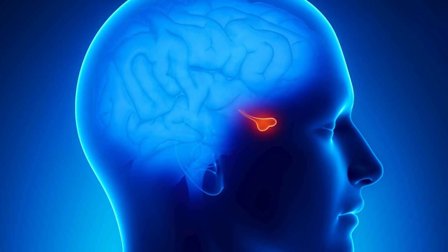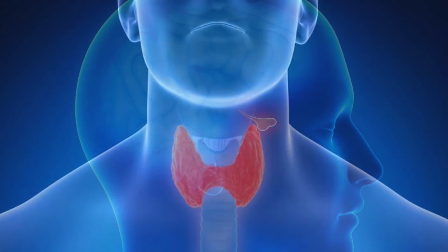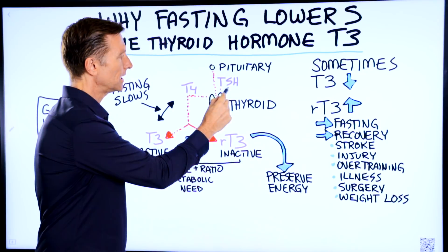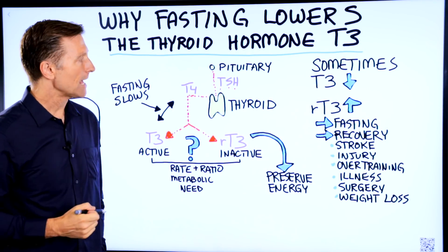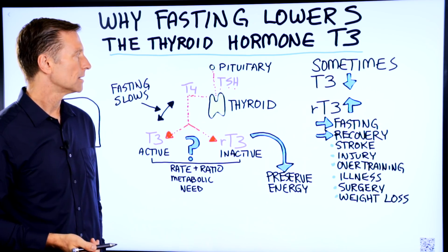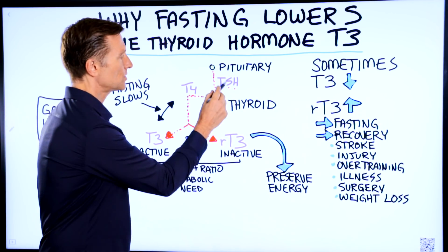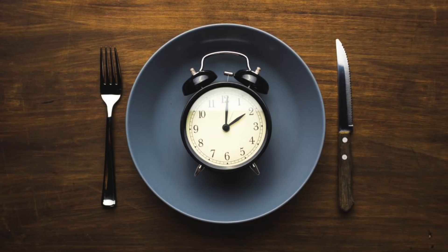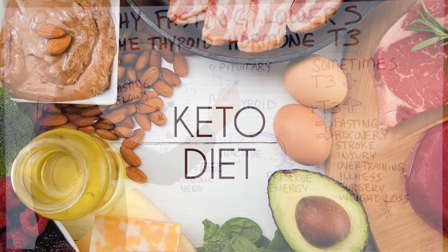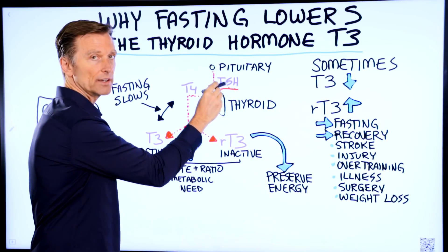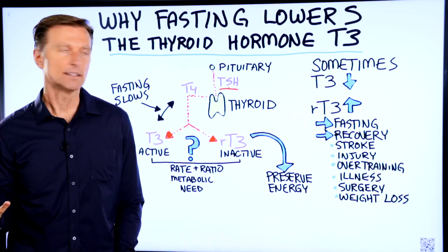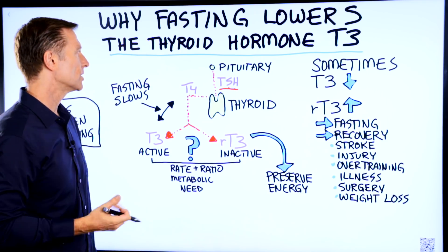We have the pituitary up here that communicates to the thyroid through a hormone called thyroid stimulating hormone. One of the main ways that hypothyroidism is diagnosed is by looking at this hormone. But when you fast or do the ketogenic diet and do it healthily, you're not going to see a change in this hormone, so you are not going to have a true hypothyroid condition or problem.